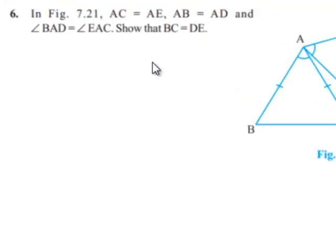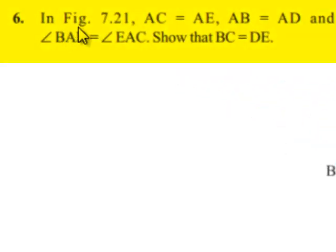Now, moving on to the sixth question. In figure 7.21, AC is equal to AE, AB is equal to AD, and angle BAD is equal to angle EAC. Show that BC is equal to DE.